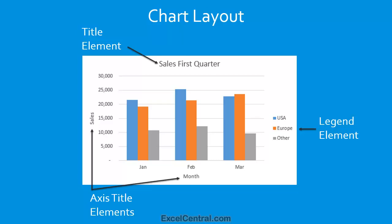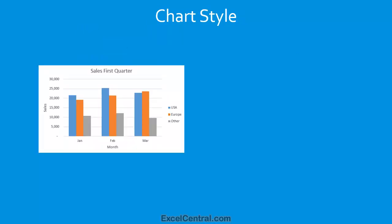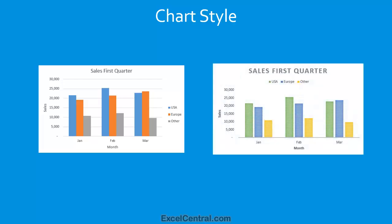When I'd finalized the Chart Type I wanted — in this case a Column Chart — and the Chart Layout — in this case including elements such as the Legend, Title, and Axis Titles — it was time to move to the last stage in the design process and select an appropriate Chart Style. Here's the chart style that I chose, but here's another style I could have chosen.